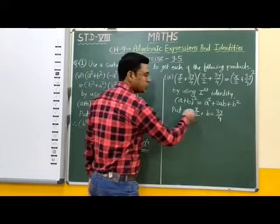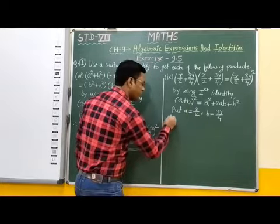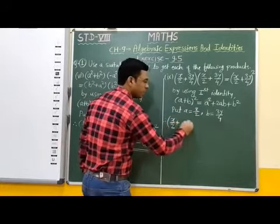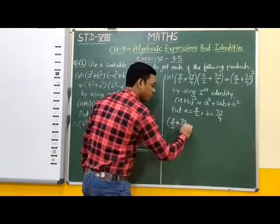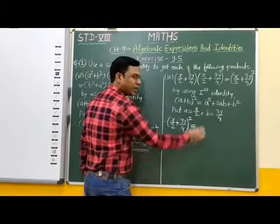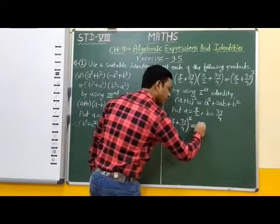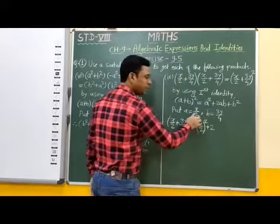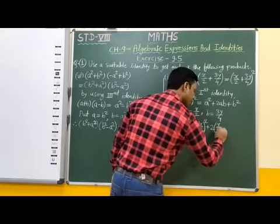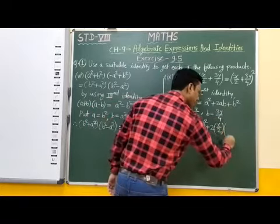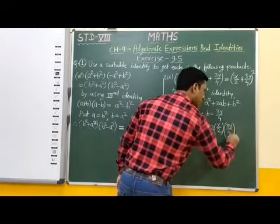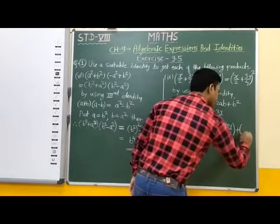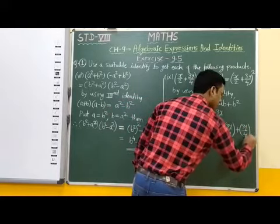Now we put these variables into the identity. In place of a we put x by 2, and b means 3y by 4, whole bracket squared. So: a square means x by 2 whole square, plus 2 times a means x by 2, times b means 3y by 4, plus b square means 3y by 4 bracket squared.